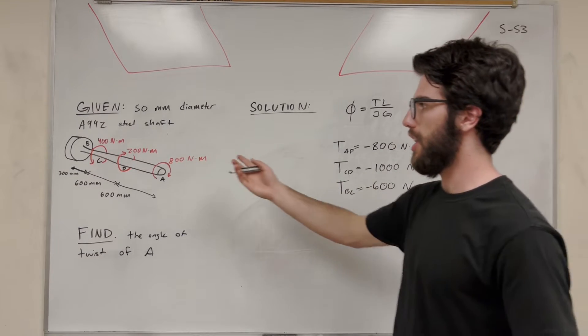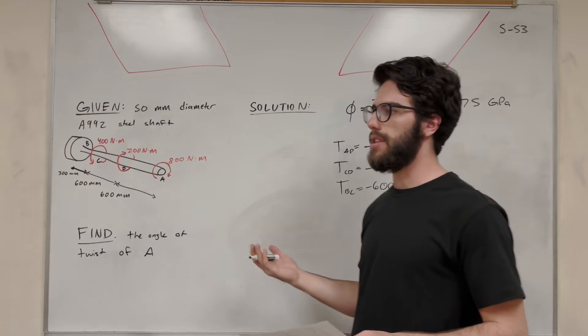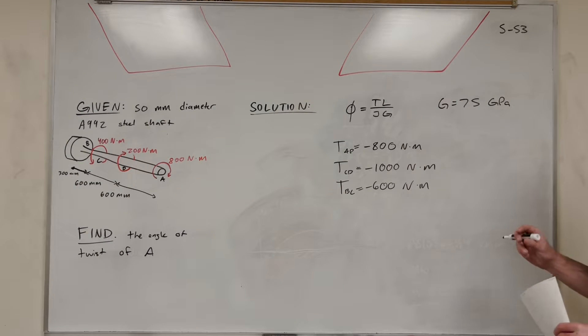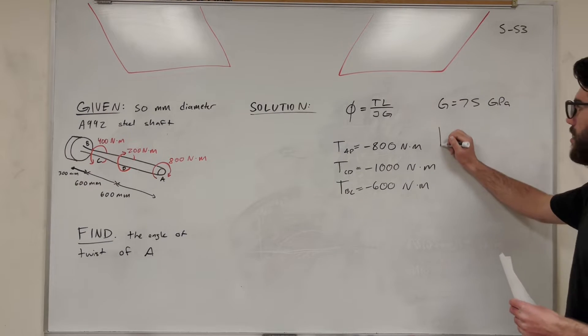So now we see that the tension in each one of these segments is the same sign. So none of them are going to be counteracting each other. So now we need to find the polar moment of inertia.